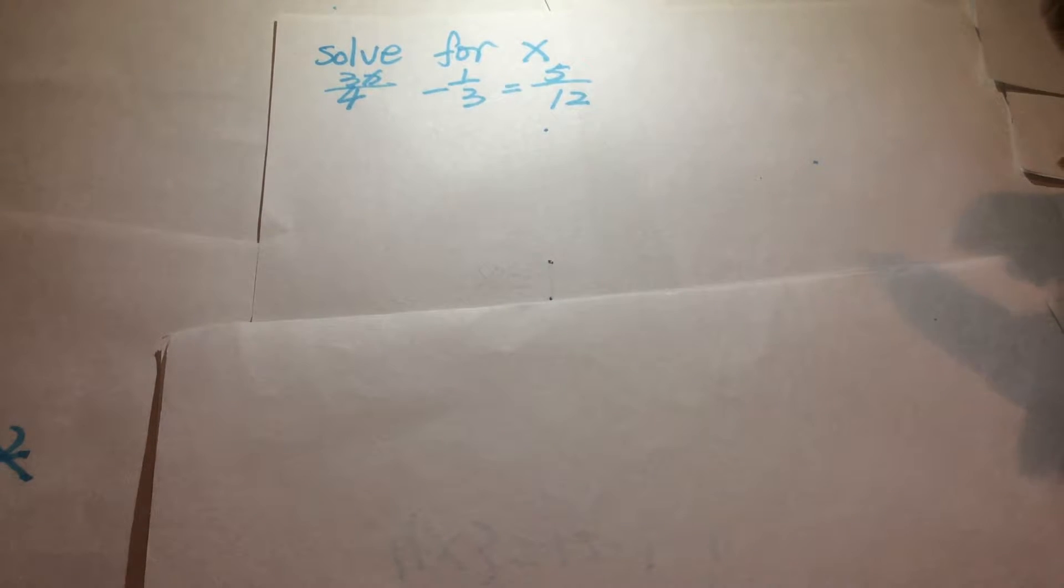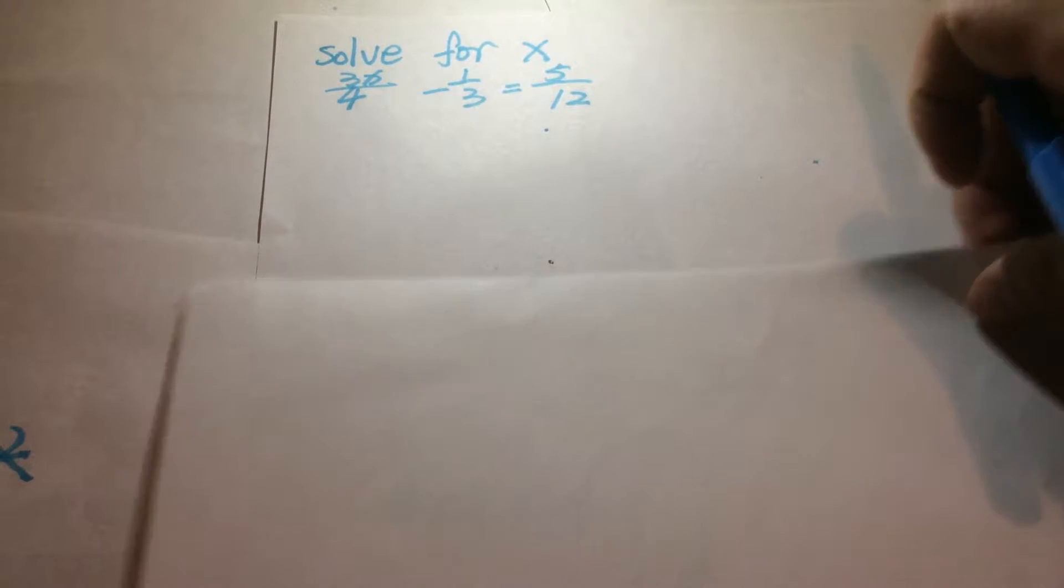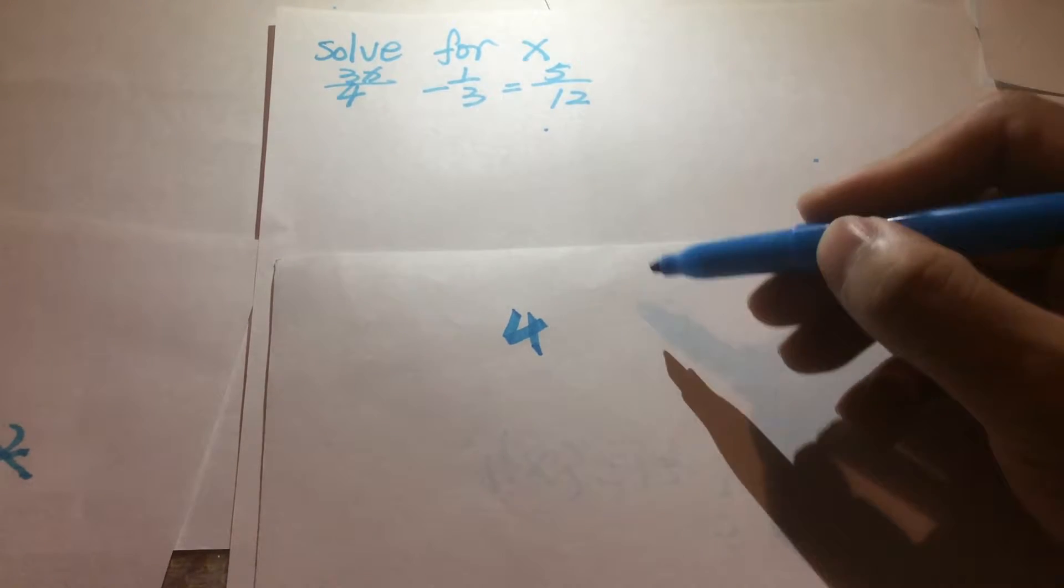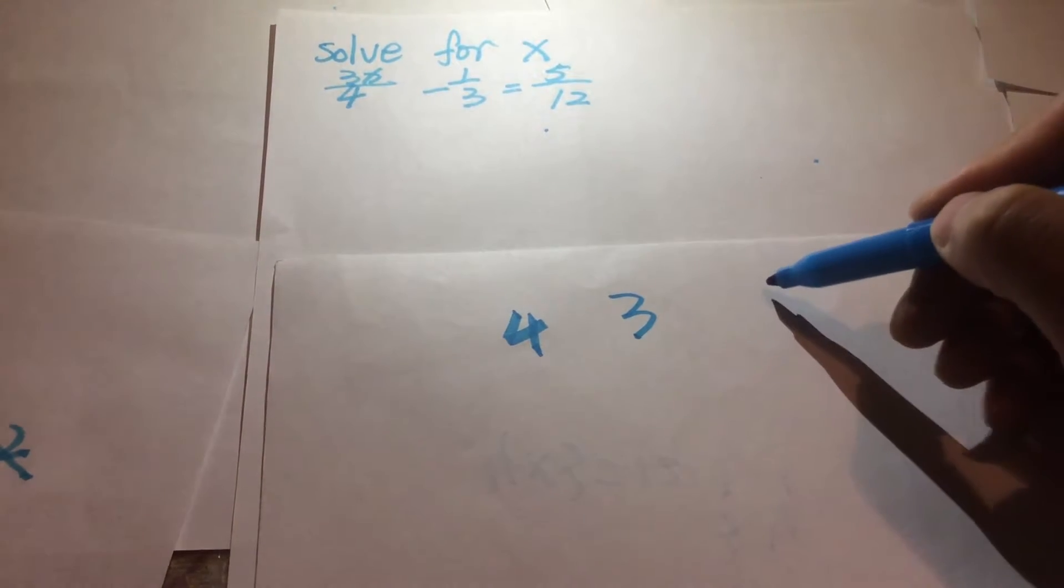The first step we need to do is find the common least denominator. There's three terms, so we need to write down each one. The first one is 4, the second one is 3, the third one is 12.